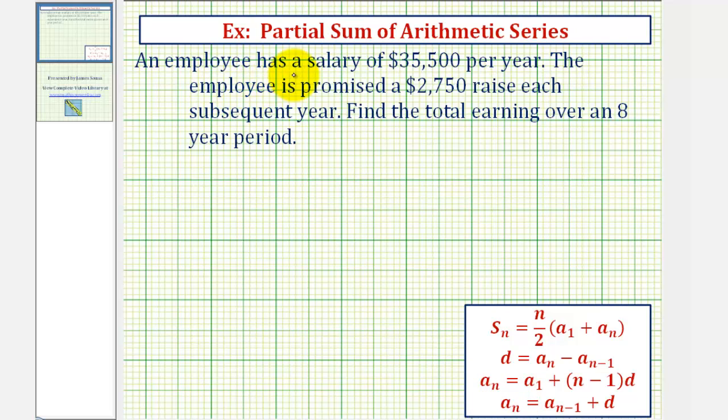Because the salary of the first year is $35,500, a sub one is $35,500. The salary is increasing by $2,750 each year, and therefore the common difference d equals $2,750. This is positive because the raise is increasing the salary each year.